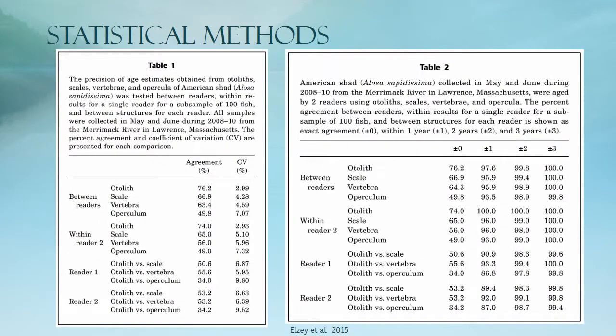In order to assess data, a few simple statistical methods will be applied. The first is percent agreement — basically how similar each reading is to others. Percent agreement will be assessed between multiple blind readings of each structure for each reader, and between ages derived from both structures compared reciprocally. In one study shown in Table 2, ages derived from scales and otoliths were only the same about 50% of the time. Most readings were within a year of each other, and almost all readings were within 3 years. Additional Wilcoxon rank sum tests between otolith and scale readings can assess over- and under-estimation, which has previously been cited as an issue when aging older fish.